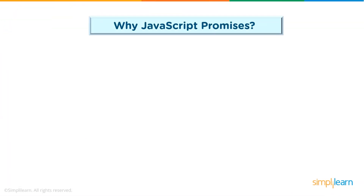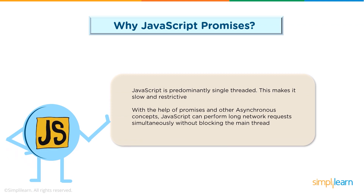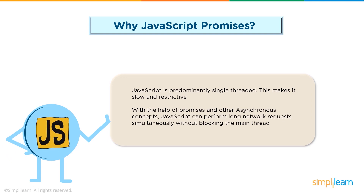First up, why JavaScript promises? JavaScript is predominantly single-threaded, meaning all processes contain the execution of instructions in a single sequence. In simple terms, one command is processed at a time. If a function relies on the result of another function, it has to wait for the other function to finish and return, and until then the current function remains idle. This can be extremely frustrating because it's time-consuming and very destructive — you're not using the system to its full capability.